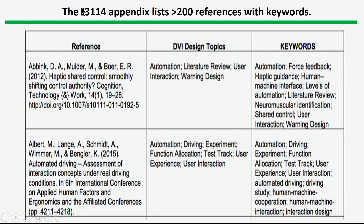In addition, J3114 has a dual quality in that it has an appendix with 200 references to papers relevant to the topic of automated driving systems. It was a useful collection of papers for the committee that created the document. While informative, it's unclear how this appendix will be used in the long term, and of course it needs to be updated quite often because work in this area is progressing at a rapid pace.